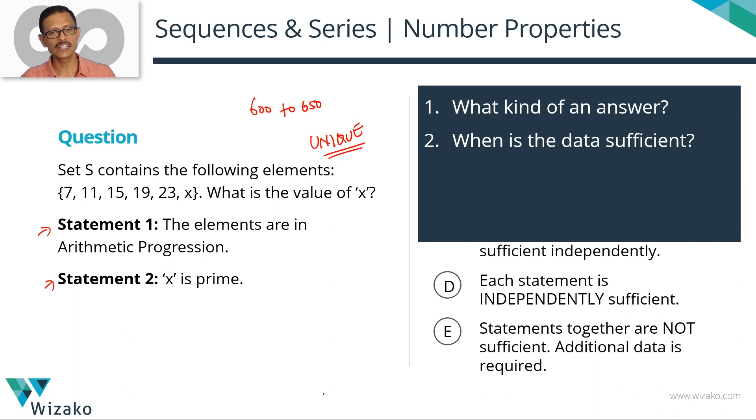But conversely, if we said x could be 29, 33, 77, then you're not coming up with a unique answer. Then the data is not sufficient. Lastly, run a quick check in your mind. Is there anything else that we know from the question stem?